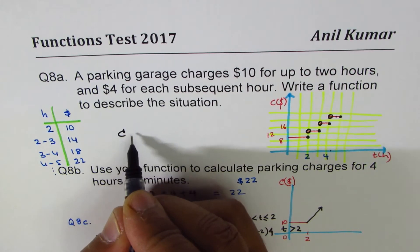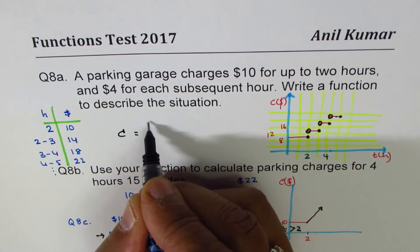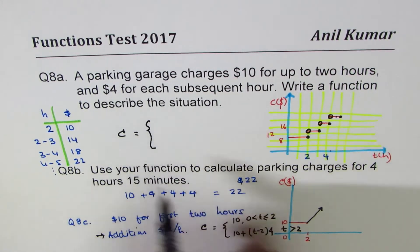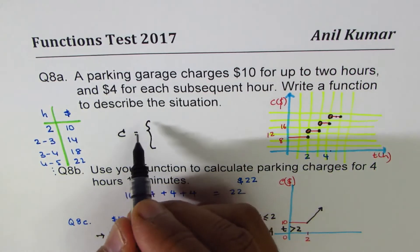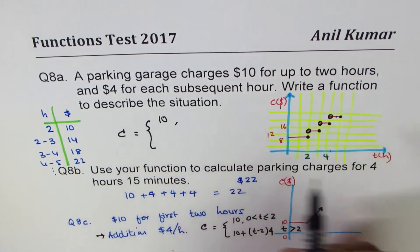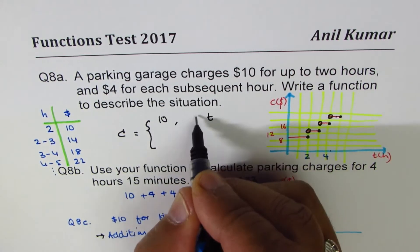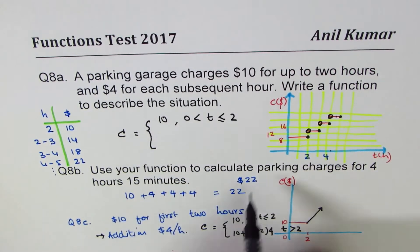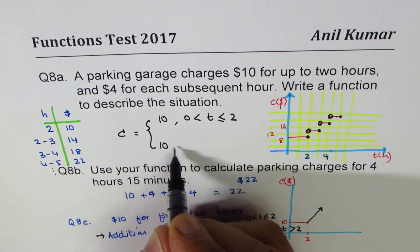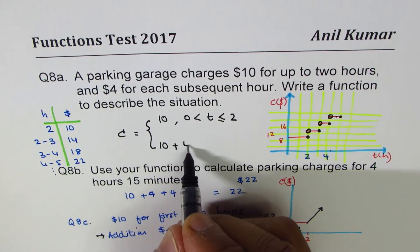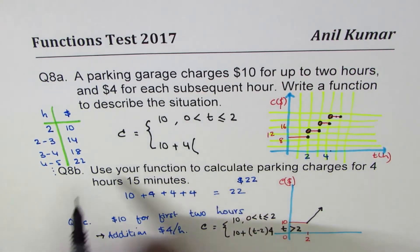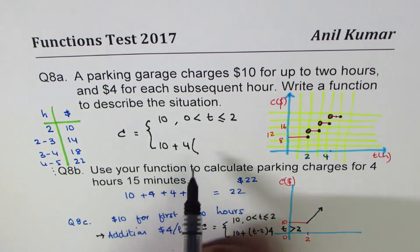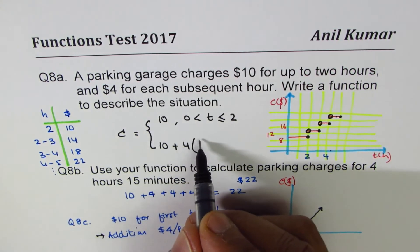So in this case, the cost function in dollars will be a piecewise function, where you are paying $10 for time t which is greater than 0, less than or equal to 2. However, you are paying 10 plus 4 times, now, so what we do here is we define another function, which is called the ceiling function.